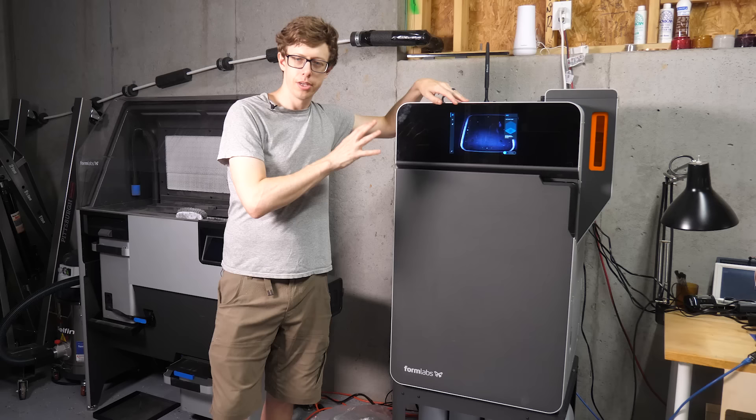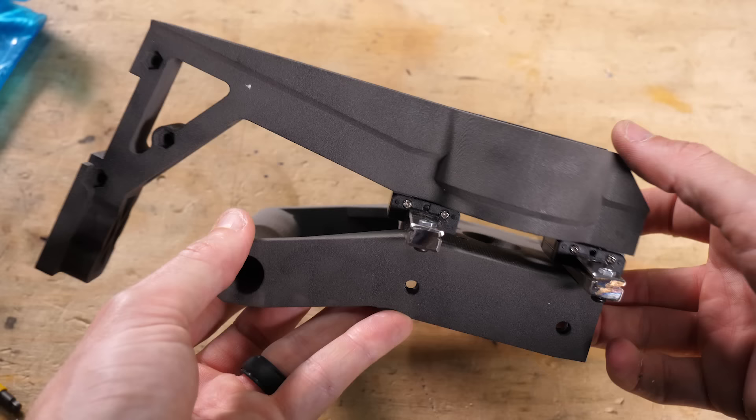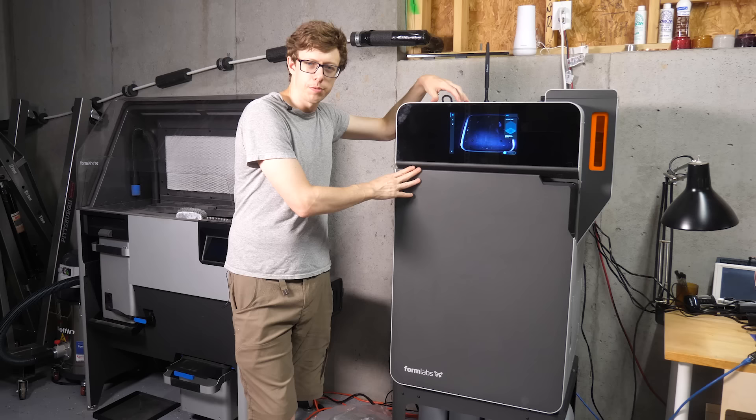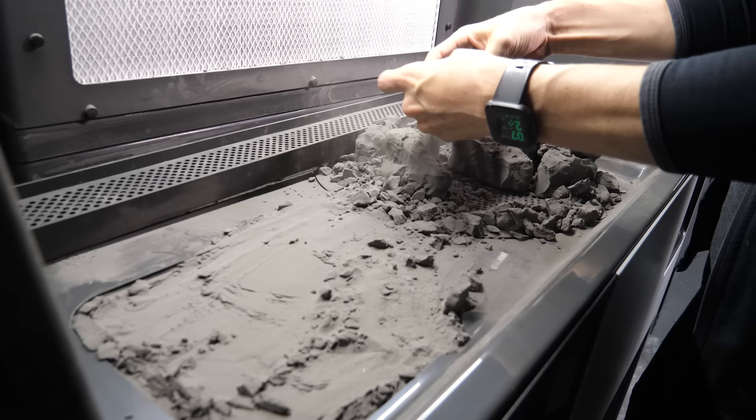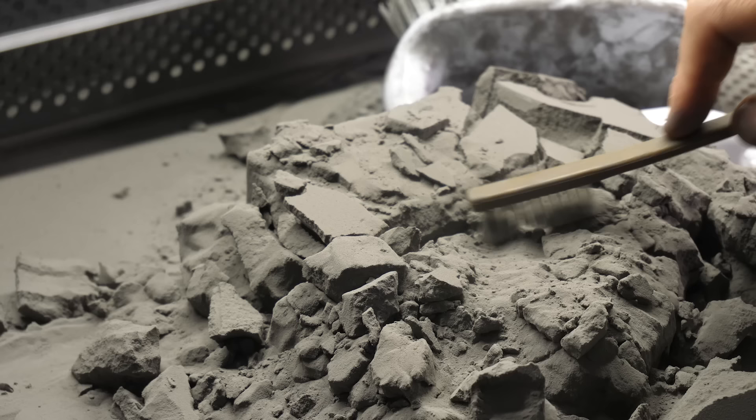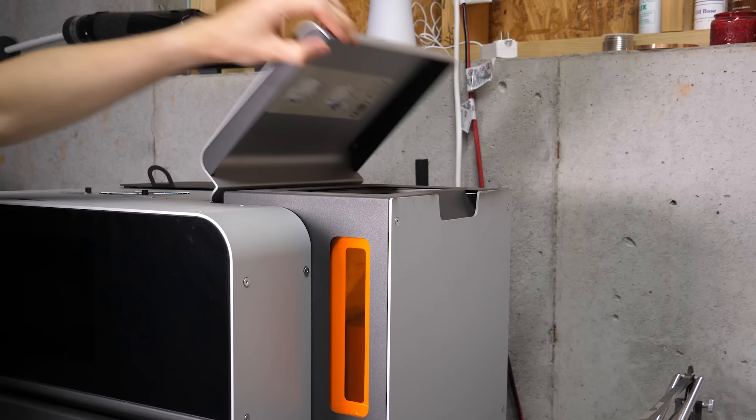So I don't think I've shown this in any videos. This is an SLS machine. It's called a Fuse One. It's also made by Formlabs. It prints things out of nylon powder, and the parts are just fantastic. It works by spreading out a very thin layer of nylon powder, and then it melts together the areas that it wants to be solid using a laser. The parts come out surrounded in powder, and you sift through it like an archaeologist. This machine collects all the unused powder, and then recycles it back into the machine so you don't waste it.